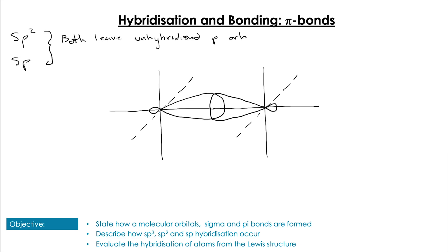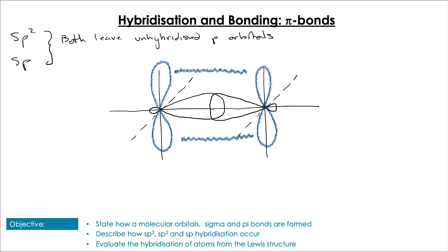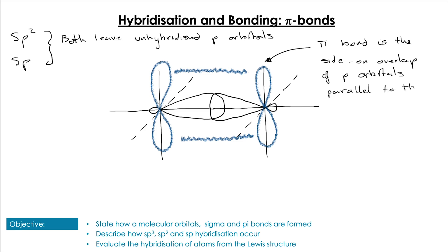In sp2 and sp hybridization, we have unhybridized p orbitals still present in the molecule, drawn above and below the plane. Because the actual atoms are much closer together, although it looks as though the p orbitals don't overlap above and below the plane, they actually have a side-on overlap that is parallel to the inter-atomic axis. The overlap of both lobes of the p orbital above and below the plane are taken together as one pi bond.